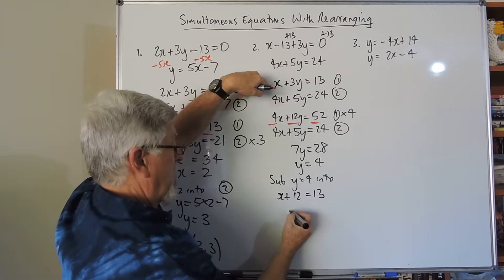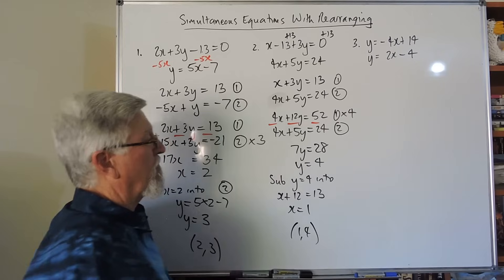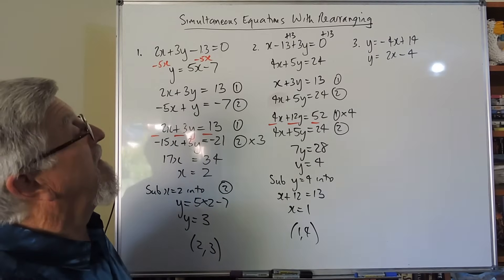And obviously then, take 12, take 12x is 1. And I've got my solution of 1 and 4. Be careful, you don't write 4 and 1, which I think I want to do.